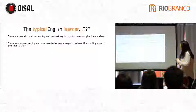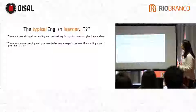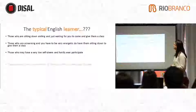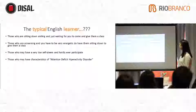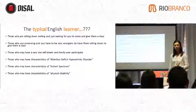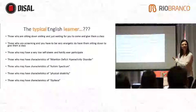Also, do you have those who are screaming and you have to be very energetic to have them sit down? Have you been through a situation like that? Yes. Also, those who may have very low self-esteem — hardly ever participate, shy. Those who have characteristics of attention deficit hyperactivity disorder. Those who may have characteristics of autism spectrum. Those who may have characteristics of physical disability. Those who may have characteristics of dyslexia. Well, we've been living with that. Maybe one of us has those characteristics.